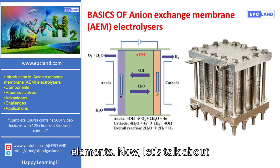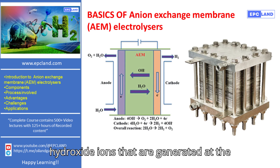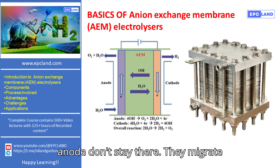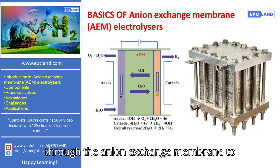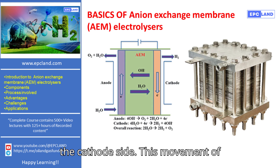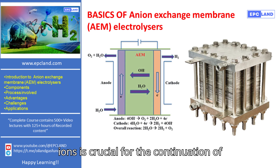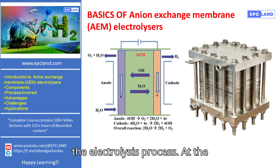Now, let's talk about hydroxide ion transport. The hydroxide ions that are generated at the anode don't stay there. They migrate through the anion exchange membrane to the cathode side. This movement of ions is crucial for the continuation of the electrolysis process.